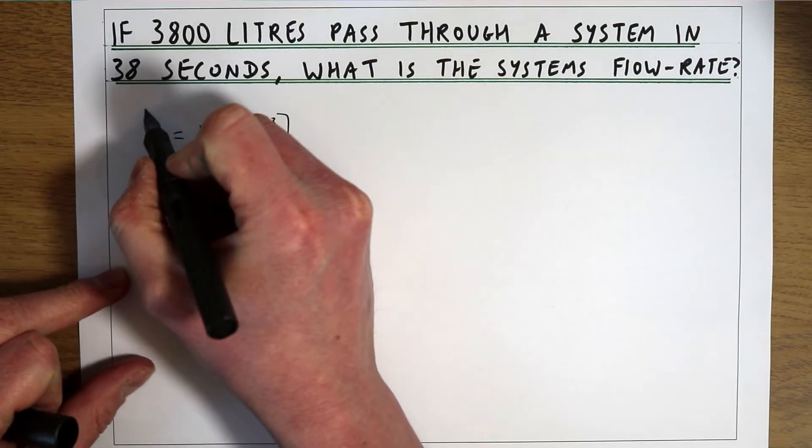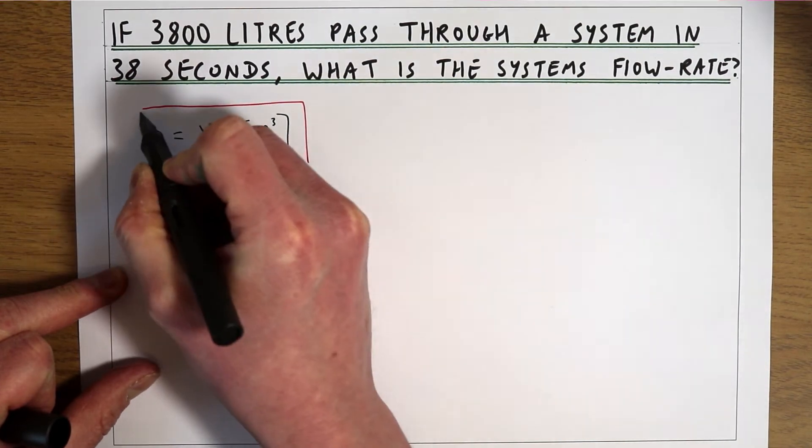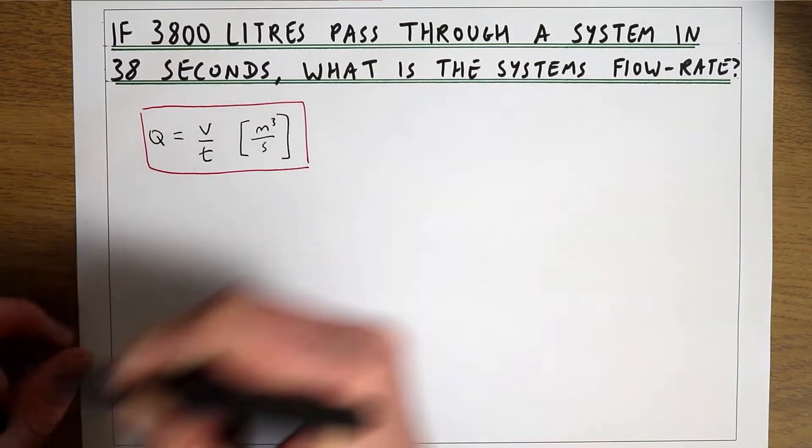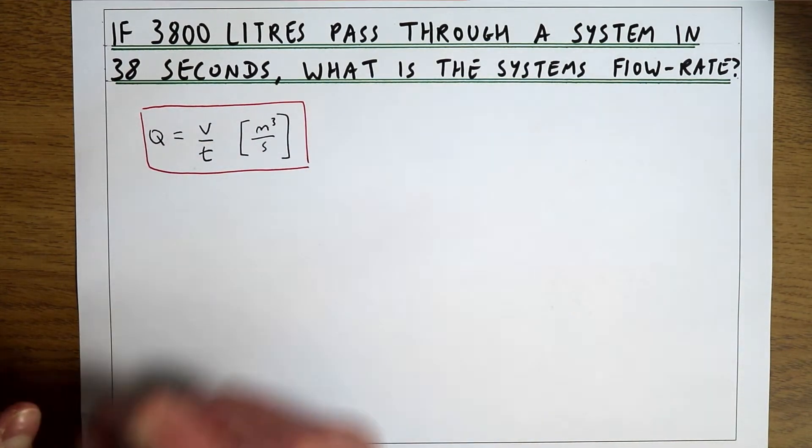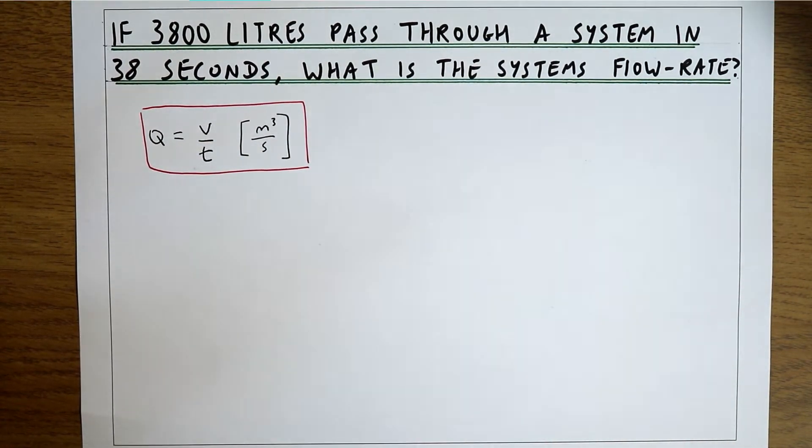This parameter is describing how many metres cubed of fluid is going through the system in a given unit time. It's telling us basically how much volume of whatever fluid the system is running with is passing through per unit time.